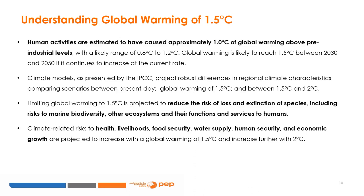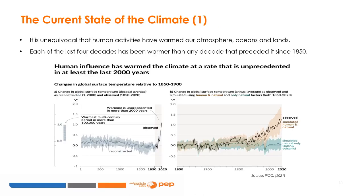Climate-related risks to health, livelihoods, food and human security, water supply, and economic growth are projected to increase significantly if the 1.5 degrees Celsius target is exceeded. It is unequivocal that human influence has warmed our atmosphere, oceans, and lands. Widespread and rapid changes in the atmosphere, oceans, cryospheres, and biospheres have occurred. Each of the last four decades has been warmer than any decade that preceded it since 1850.